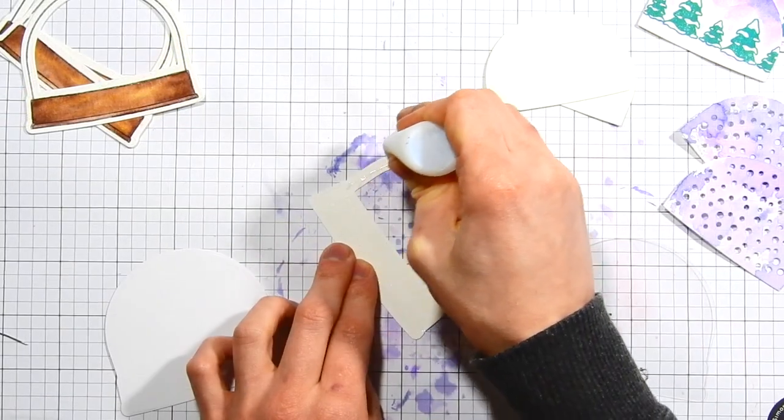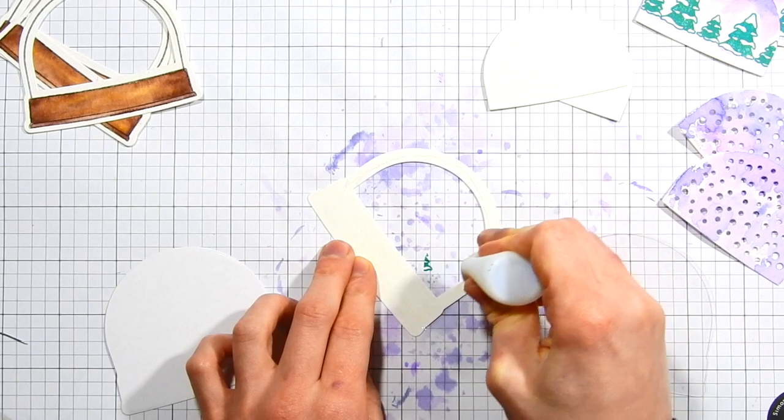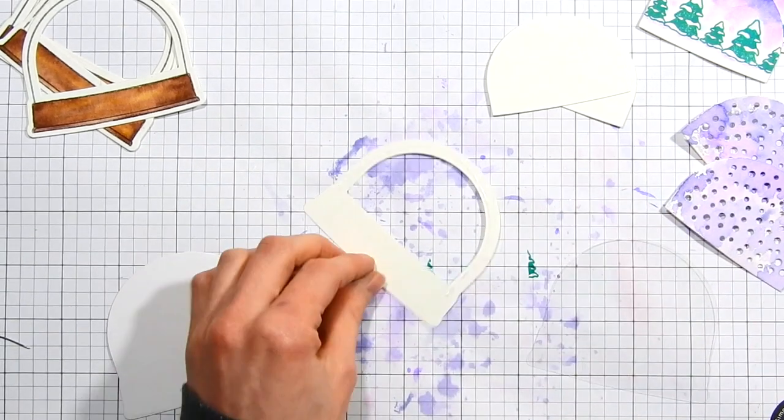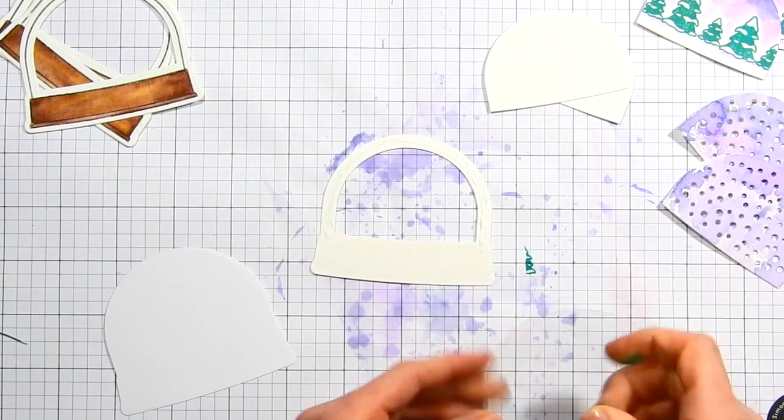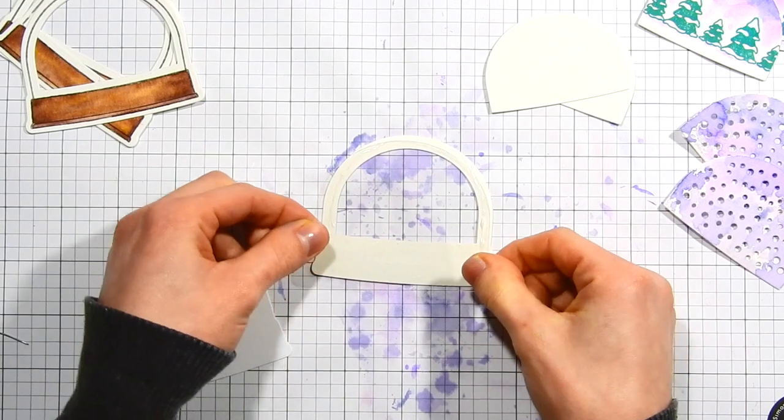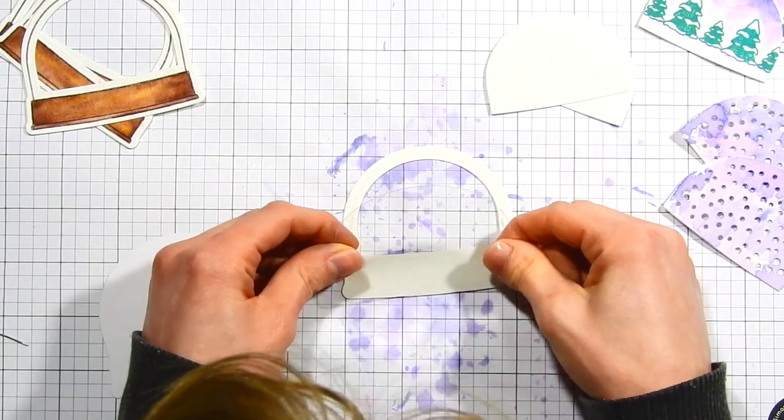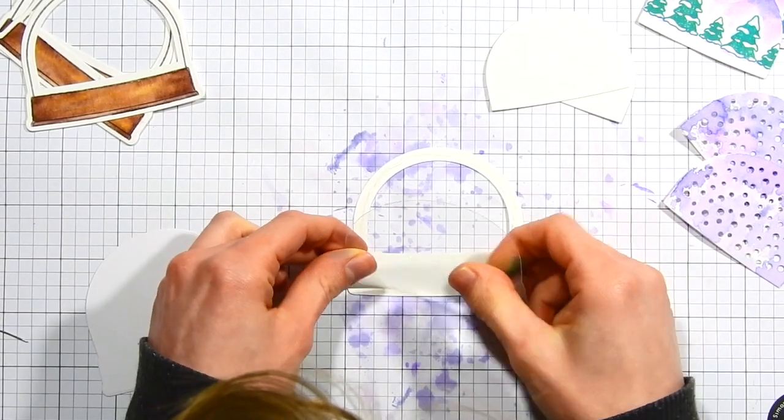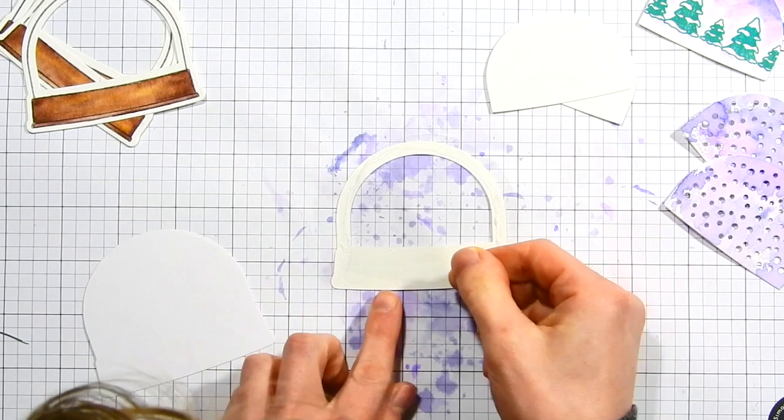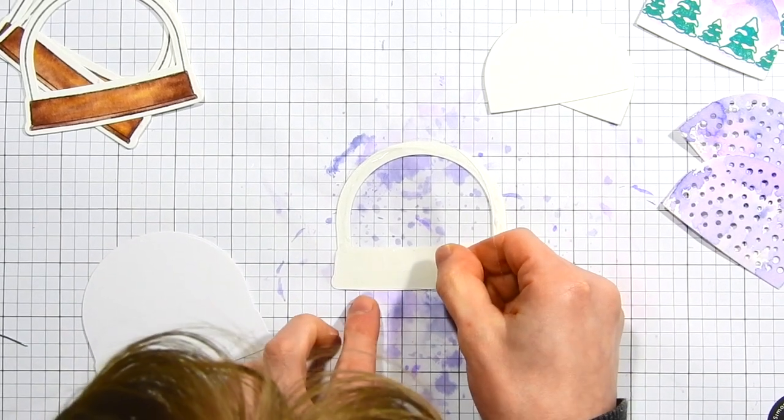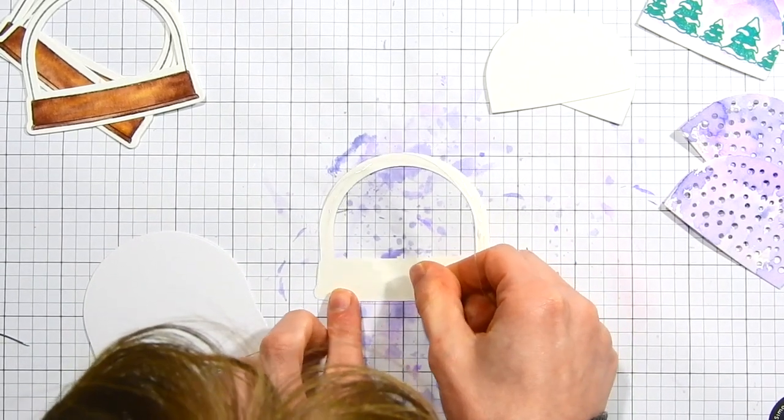All right so now I'm going to go ahead and start putting these shakers together. This is very easy and I'll go ahead and show you how I did this. I'm first taking the snow globe that we stamped and colored and I'm adding a piece of acetate to the back side and that's going to adhere the acetate and create a window for our shaker elements.